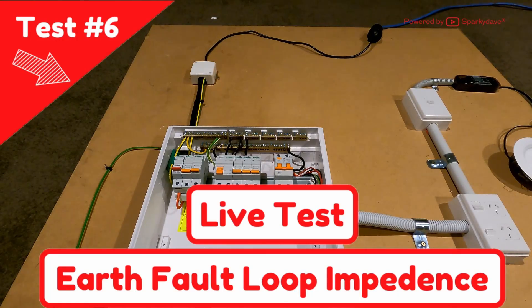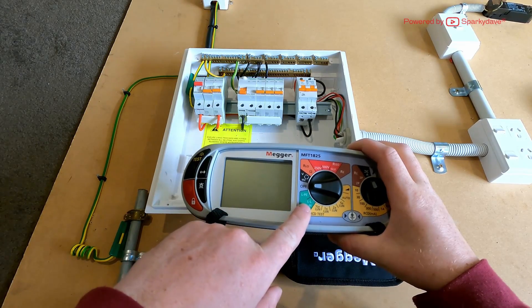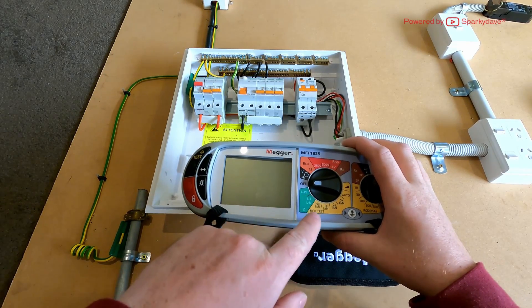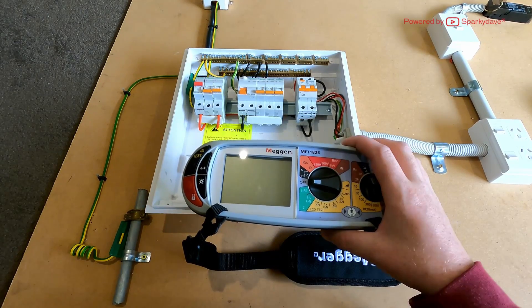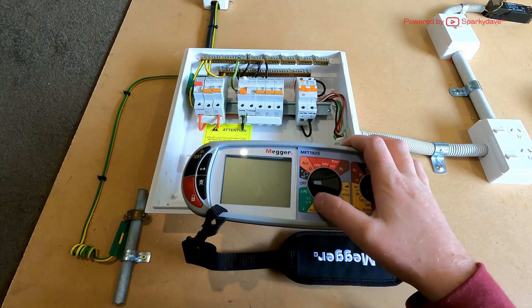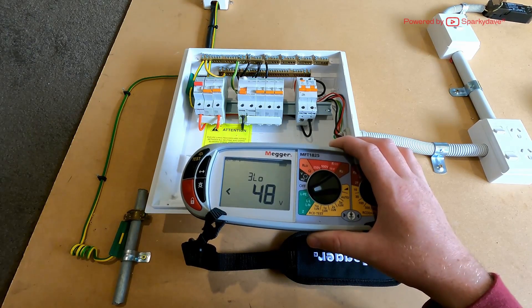Earth fault loop impedance test. Now what we've got here on the Megger is this green area, and we've got our line to earth and line to neutral tests. We do both of these tests because a short circuit can happen between either potential. First of all, we'll throw it on to line to earth.